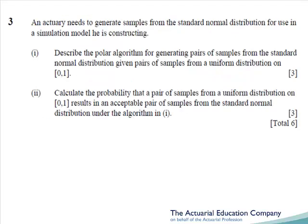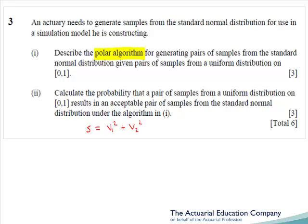Question 3 asks us about simulation. Usually we have a question on the inverse transform method or more commonly the acceptance rejection method. However, this question marks the first time that we've been asked to use the polar algorithm. This is actually given in the tables and so essentially students were getting marks for copying it out. However, in the algorithm it involves v1 and v2 which come from uniform minus 1 to 1 distributions — don't forget to explain how you obtain these values. The polar algorithm requires that s equals v1 squared plus v2 squared, lying between 0 and 1, so part 2 is asking us to calculate the probability of this being the case. Unless you take a geometric approach you're going to run into some very sticky algebra, and the wisest students will have moved on and got their marks elsewhere.